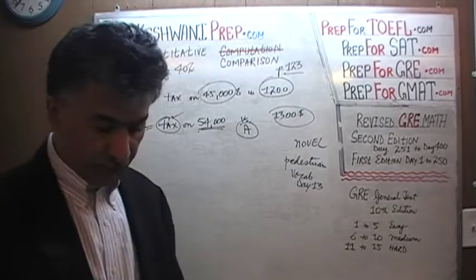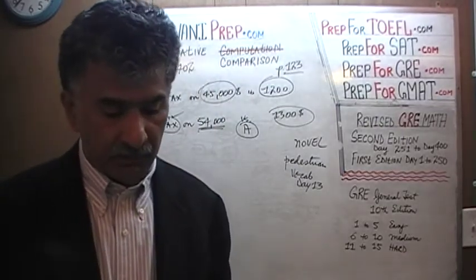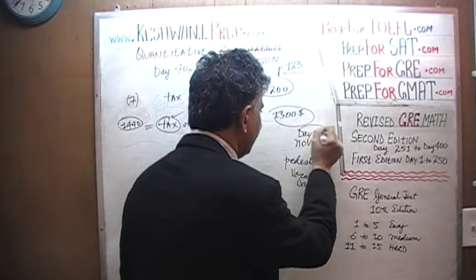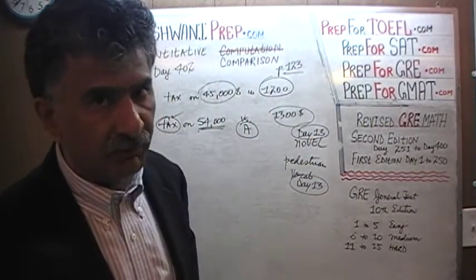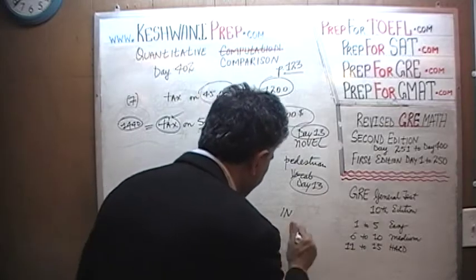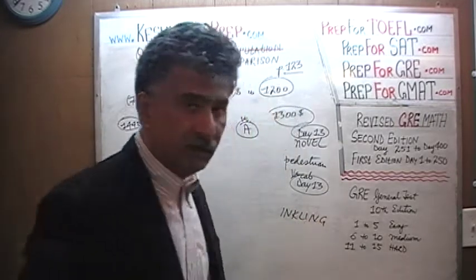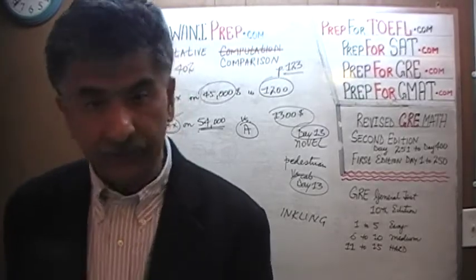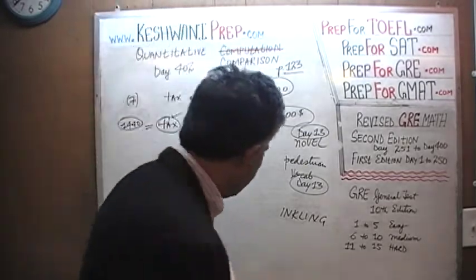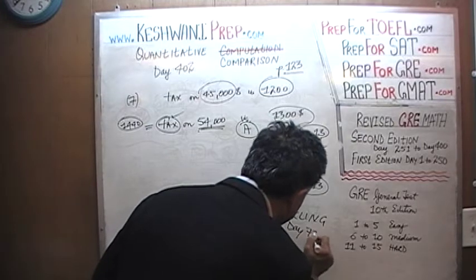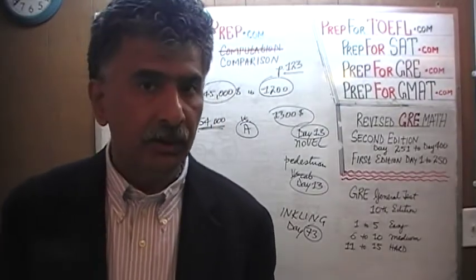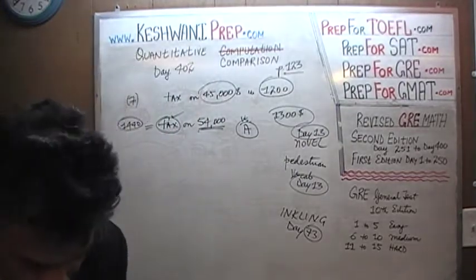There was nothing novel about that method. I'm looking at my list to find the day we learned 'novel' — also day number 13, which makes sense since 'pedestrian' and 'novel' are antonyms. I had an inkling they might be on the same day. We learned 'inkling' on day number 73 — type in 'GRE vocabulary words day 73' to learn that word along with a whole bunch of others.